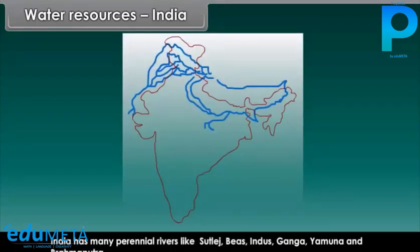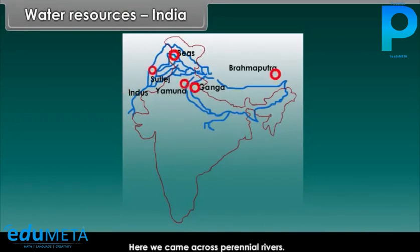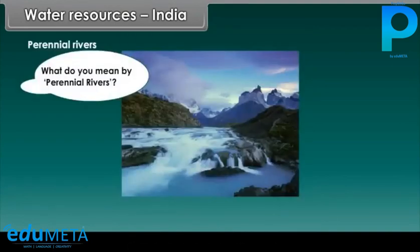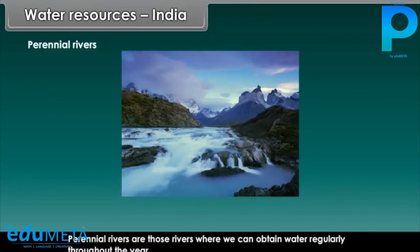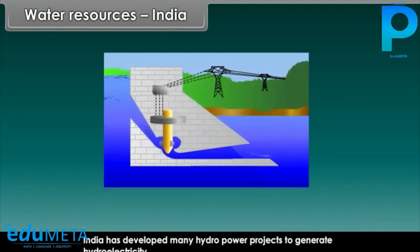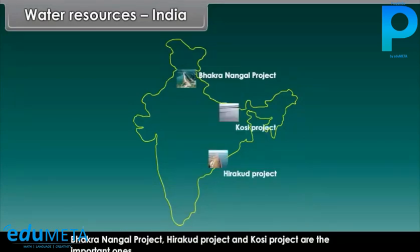India has many perennial rivers like Sutlej, Beas, Indus, Ganga, Yamuna, and Brahmaputra. Perennial rivers are those rivers where we can obtain water regularly throughout the year. India has developed many hydropower projects to generate hydroelectricity, of which the Bhakra Nangal project, Hirakud project, and Kosi project are the important ones.